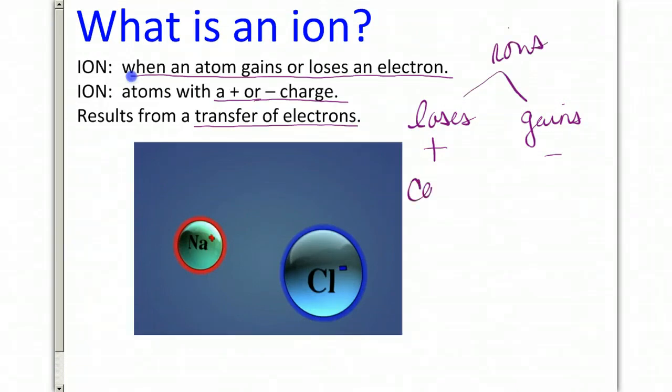If you lose and become positive, it's specifically called a cation, and if it gains and becomes negative, it's specifically called anions.